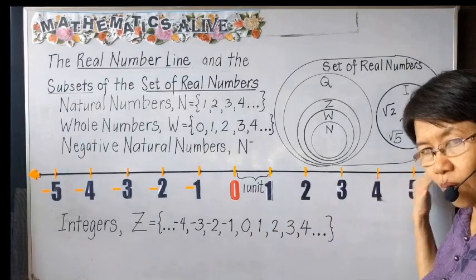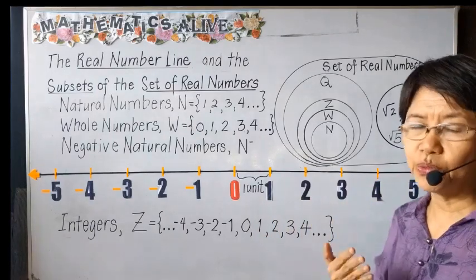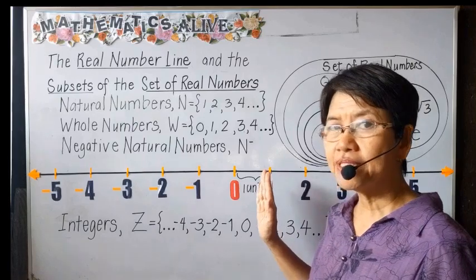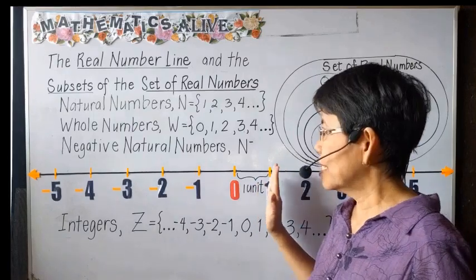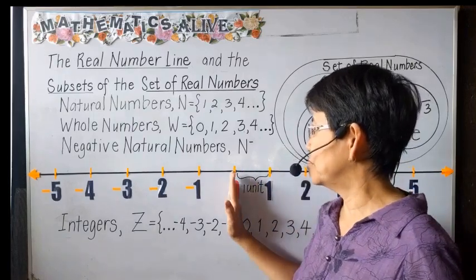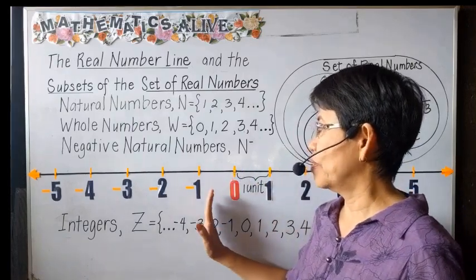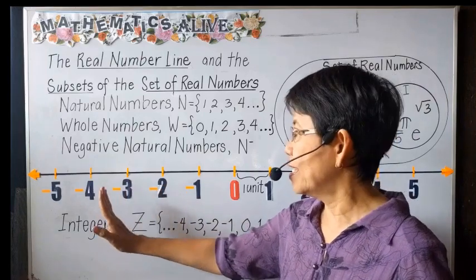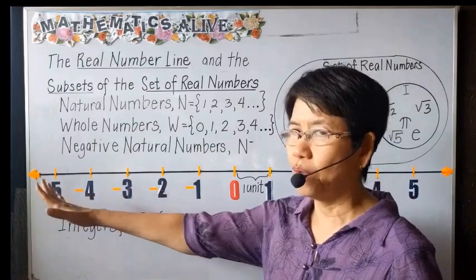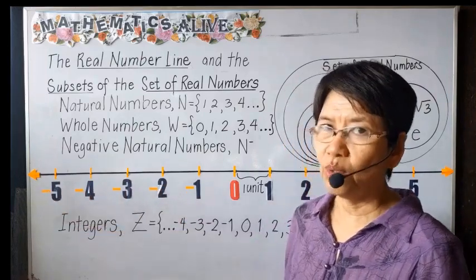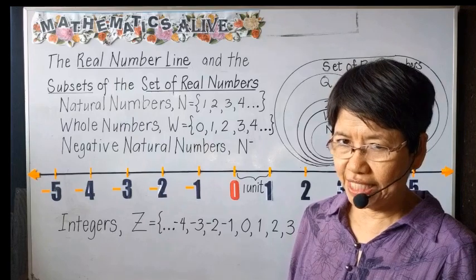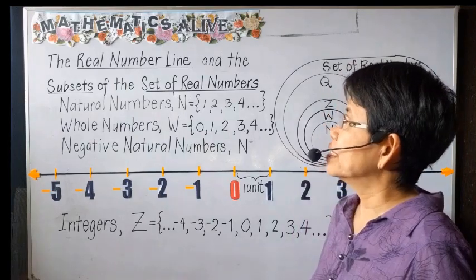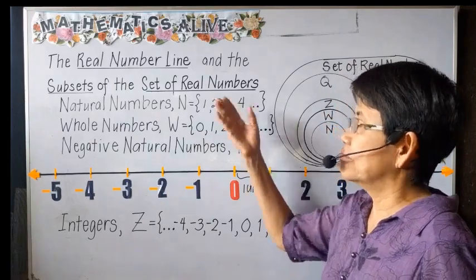and so on up to infinity. The negative numbers are to the left of 0, so we have negative 1, negative 2, negative 3, negative 4, and so on up to infinity.